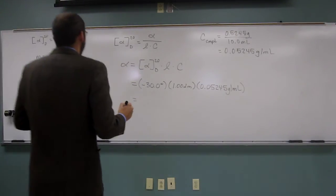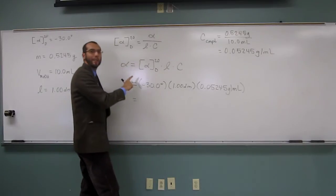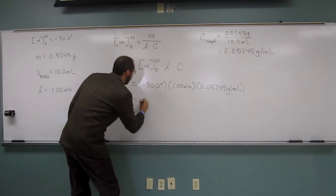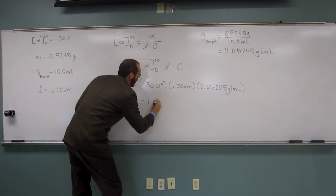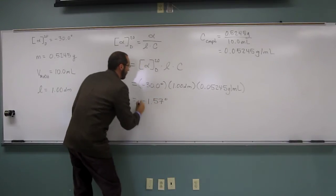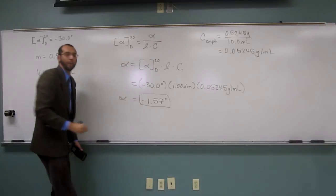And what did you say? Negative 1.5735. Yeah, so how many sig figs though? Only three. Okay, so negative 1.57 degrees. So that's the observed rotation. Is everybody okay with doing that one?